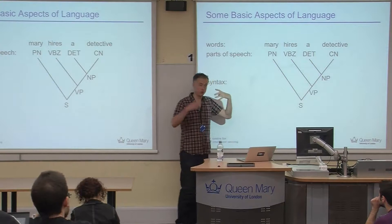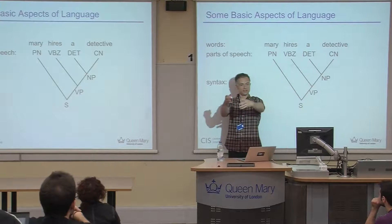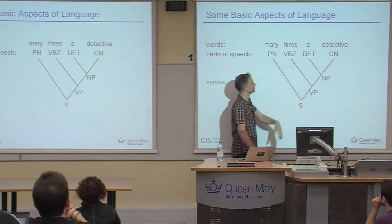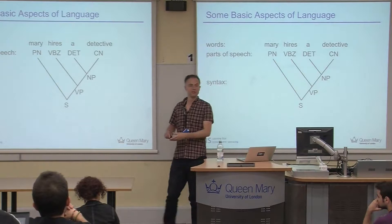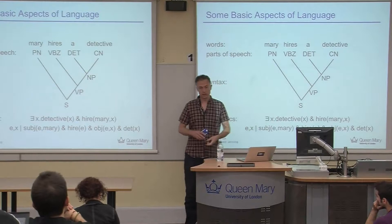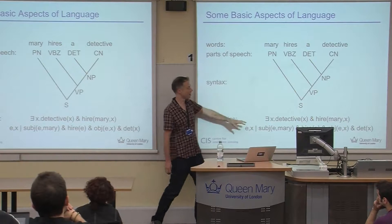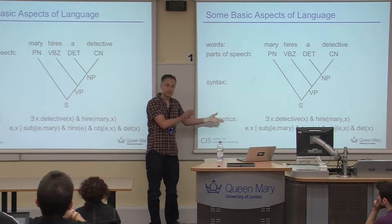We also have actual structure in how words go together to make phrases — which is how we work out what a sentence actually means. 'A detective' forms a noun phrase referring to a person. 'Hiring a detective' is a verb phrase. 'Mary hires a detective' is a full sentence where we know there's a subject and a verb phrase. It's through recognizing this structure that we can interpret a string of words into some underlying meaning we can do something with.